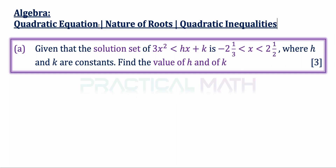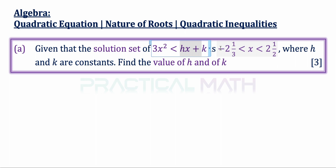In this video we will be discussing a question on quadratic equations and the nature of roots. We will also be talking about quadratic inequalities. Let us begin with Part A. Given the solution set of 3x squared less than hx plus k is given to be x in the range of negative 2 and one third to 2 and a half, where h and k are constants, you are to find the value of h and of k.